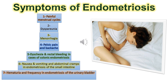Symptoms of endometriosis: painful menstrual cycles, dyspareunia, menorrhagia, pelvic pain and back ache, dyscasia and rectal bleeding in cases of colonic endometriosis, nausea and vomiting and abdominal cramps in endometriosis of the small intestine, hematuria and frequency in endometriosis of the urinary bladder.